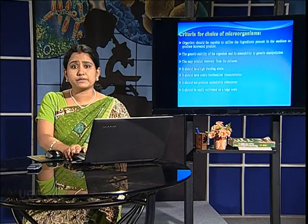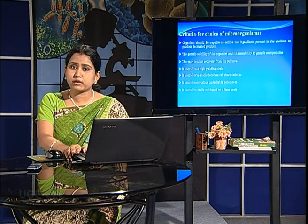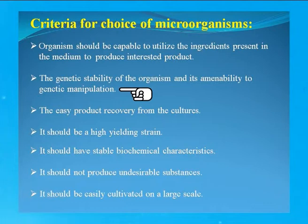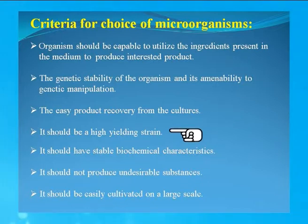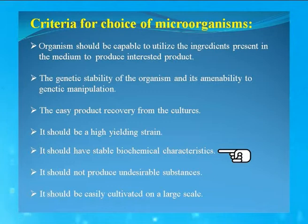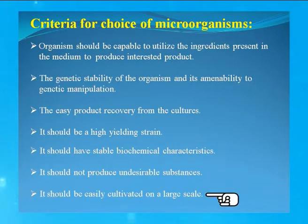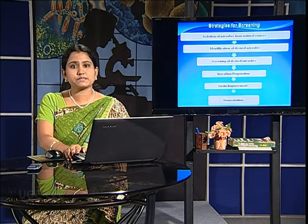There are certain criteria for the choice of microorganisms. The microbes should be genetically stable, product recovery from the culture should be easy, the strain should be high-yielding, it should have stable biochemical characteristics, it should not produce undesirable substances, and it should be easily cultivated on a large-scale basis. And there are certain strategies for screening of microbes.